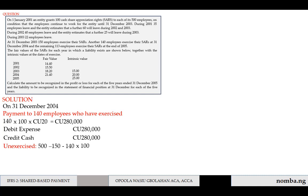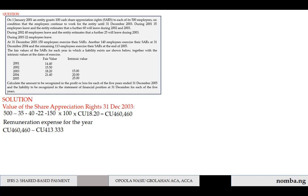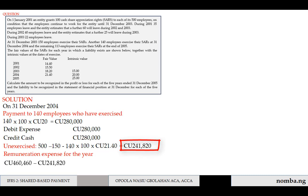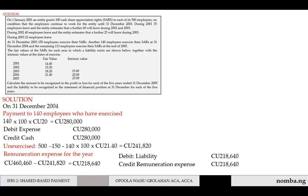The remaining employees who have not yet exercised at end of 2004 are: 403 − 150 − 140 = 113 employees. The remaining liability = 113 × 100 × fair value of 21.40 = 241,820. Since the liability decreased from 460,460 to 241,820 — a decrease of 218,640 — we debit liability with 218,640 and credit remuneration expense (P&L) with 218,640, because there is a decrease in liability.